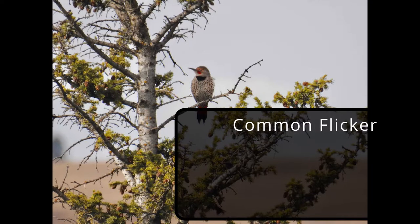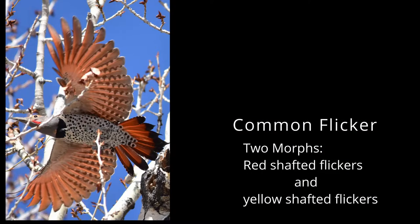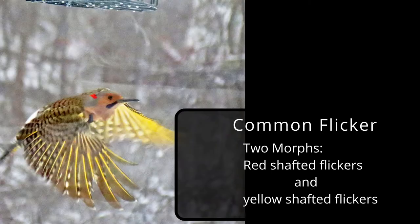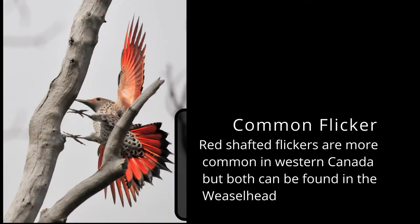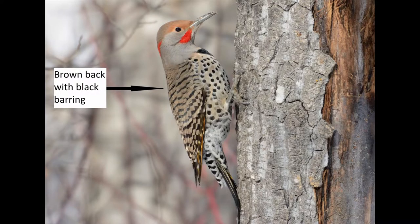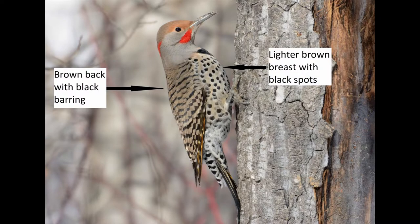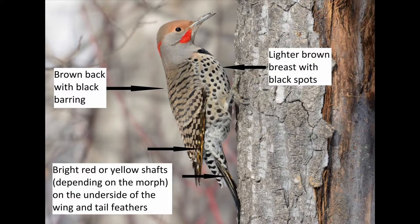The common flicker. There are two different forms but both morphs are considered one species. The red-shafted and the yellow-shafted morphs can both be found in the Weaselhead, though the red-shafted is much more common. They have brown backs with black barring and a lighter brown breast with black spots. When they take flight, look for the bright highlights of red or yellow on the underside of their flight and tail feathers.